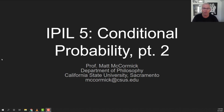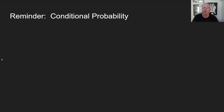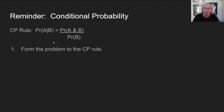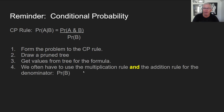I'm going to jump right in with a quick review of our last lecture, and then we're going to do some much harder problems. We learned that the conditional probability rule is written out with A's and B's, and you've got to get it memorized. We form the problem to the CP rule, use abbreviations to stand in for A and B, draw a pruned tree, and get values from the tree for the formula. We often have to use the multiplication rule and the addition rule for the denominator.